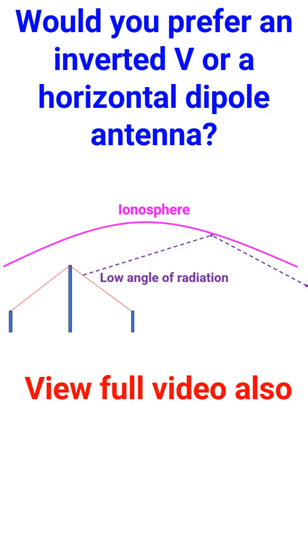The radiation pattern of both types of dipoles is perpendicular to the axis of the antenna. Yet in the case of an inverted V, as the limbs of the antenna are angled downward, the radiation pattern tends to become a bit more omnidirectional compared to a horizontal dipole.